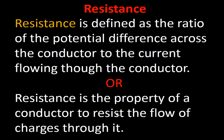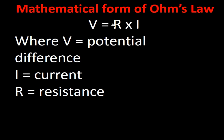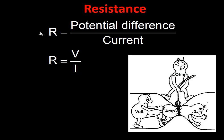Resistance is defined as the opposition to the flow of charges — it resists, meaning it does not allow electrons to move forward. It is a property of a conductor to resist or oppose the flow of charges (electrons) through it. From the formula, rearranging gives R = V/I, so resistance can also be defined as the ratio of potential difference to current.